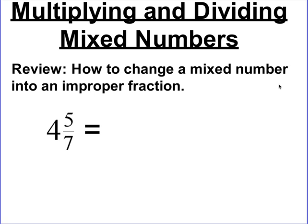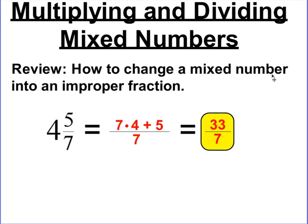If I give you a mixed number — here the mixed number is 4 and 5 sevenths — and I ask you to make an improper fraction out of it, remember what you're supposed to do is multiply the denominator times the whole number, and then add the numerator to that product. So here we have 7 times 4 plus 5, over 7, because the denominator does not change. 7 times 4 is 28, and 28 plus 5 is 33, so 4 and 5 sevenths written as an improper fraction is 33 over 7.